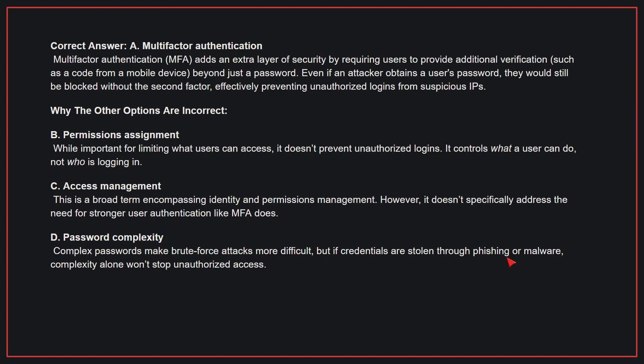MFA adds an extra layer of security by requiring users to provide additional verification beyond just a password. Even if an attacker obtains a user's password, they would still be blocked without the second factor, effectively preventing unauthorized logins from suspicious IPs. Why the other options are incorrect? B: Permissions assignment. While important for limiting what users can access, it doesn't prevent unauthorized logins. It controls what a user can do, not who is logging in.